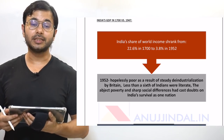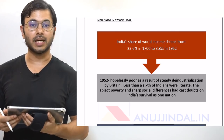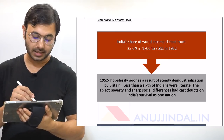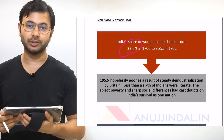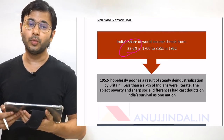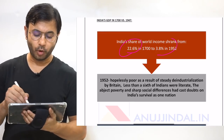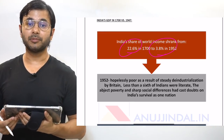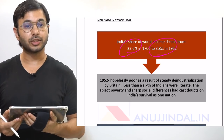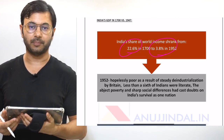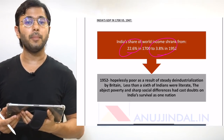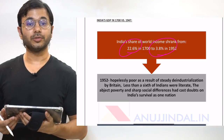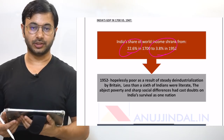A common measure is the share of world income that an economy has. In the year 1700, India had a share of 22.6% in the entire world income, which reduced to a mere 3.8% in the year 1952. This leads us to conclude that the Britishers deindustrialized India. The three main contributions of the Britishers that resulted in deindustrialization were abject poverty, illiteracy, and drain of wealth.